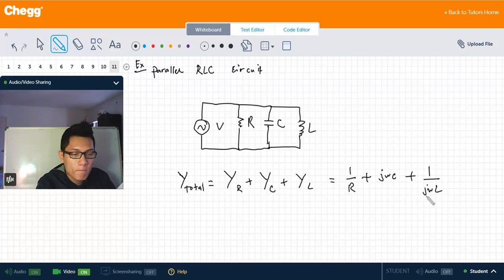From here you can also bring the j from the bottom to the top, and you can write out something like this: 1 over R plus jωC minus j over ωL.